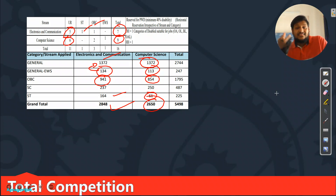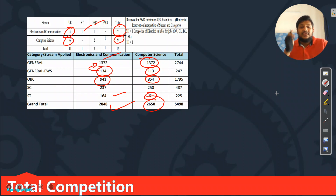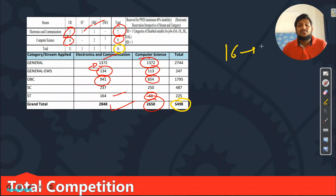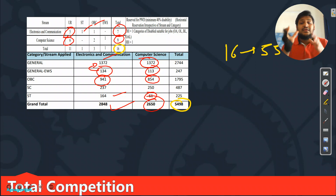So this is the competition — the total number of applications received for Scientist B posts. If you are not serious till now, be serious, because approximately 5,500 people are competing for only 16 vacancies. That's why a perfect strategy is needed and every second should be devoted to your NILATE METE exam.